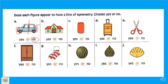تعالوا نشوف الـ heart الجميل ده — نقدر نعمله line of symmetry ولا لا؟ لو جينا رسمنا line من هنا، يا ترى ده line of symmetry ولا لا؟ تعالوا نتأكد. آه، line of symmetry! شايفين كل اللي هنا هو نفس الـ part اللي هنا؟ بنقول عليه: yes.